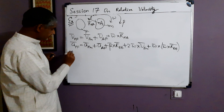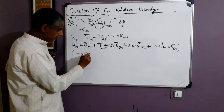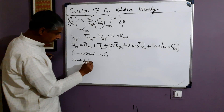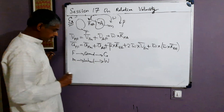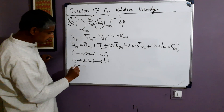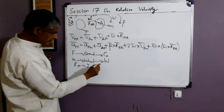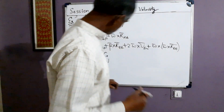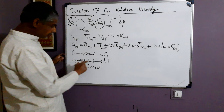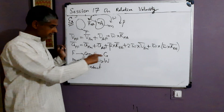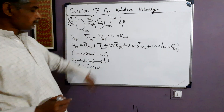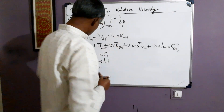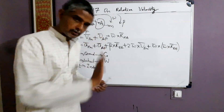In our problem, frame F is replaced by ground G, frame M by wheel W, and point P is the insect. The most convenient choice for point A is the center C of the wheel, since its motion details are given. So the velocity formula becomes: VPG = VPW + VCG + omega cross RPC. These two formulas — velocity and acceleration — will be used throughout the solution.